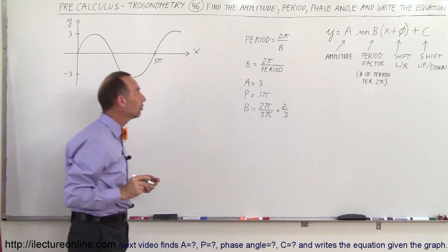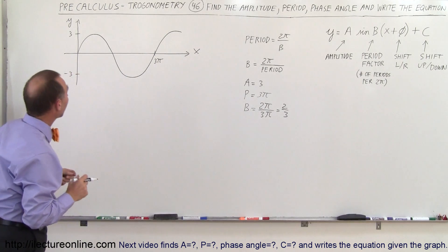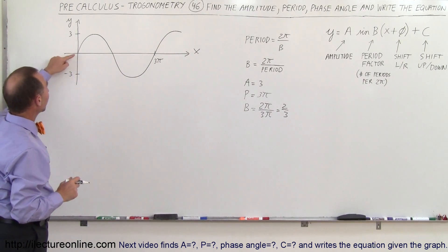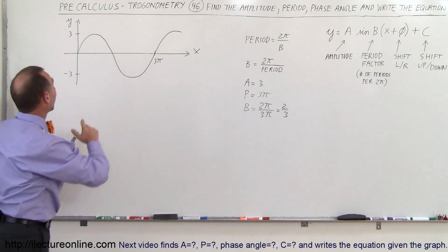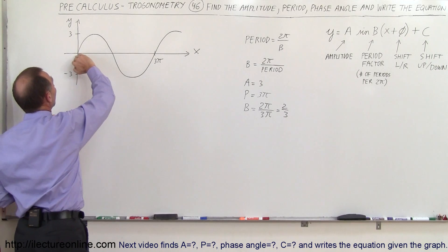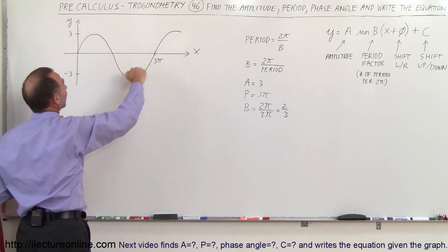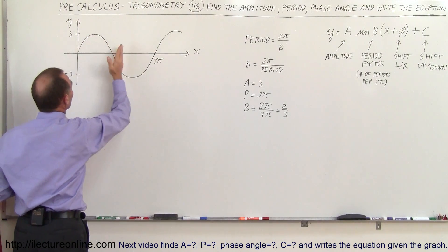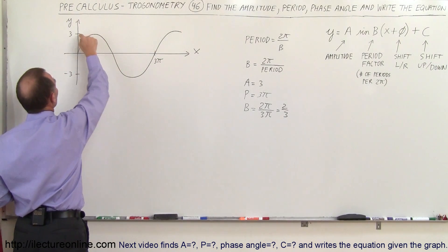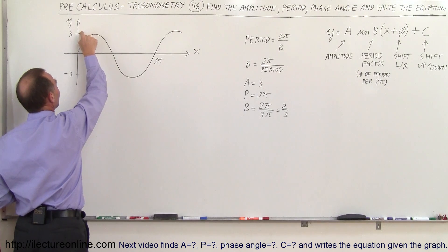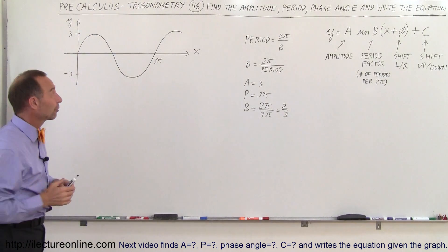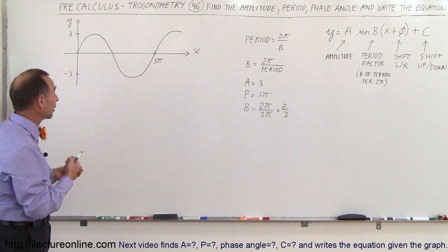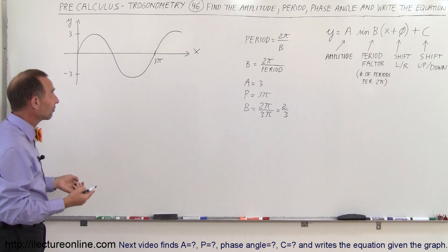So b equals 2/3. It looks like the function starts at the origin, so therefore we don't have a phase angle — it's not shifted left or right. If it starts at its maximum value it's a cosine function, and if it starts at the origin it's a sine function. In this case we can write it as a sine function.